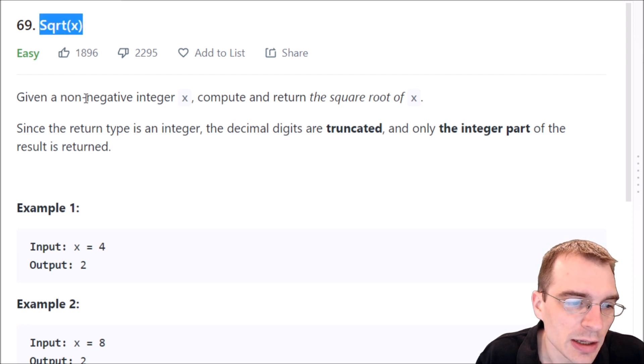Given a non-negative integer x, compute and return the square root of x. Since the return type is an integer, the decimal digits are truncated and only the integer parts are returned. So basically that means we find the square root, but we want to return rounded down to the nearest integer, like the floor function of the square root.